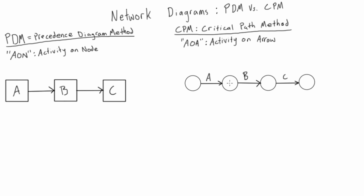Once we've completed the network diagram, we number the nodes generally going left to right: 1, 2, 3, 4. In a more complicated diagram there'll be ups and downs, but we use these numbers as what's called an IJ number. Activity A's IJ number would be 1-2, B's would be 2-3, and C's would be 3-4 — it's just which node the activity comes from and which node it leads to. One rule is that I has to be less than J, so you can't have a 3 leading into a 2.